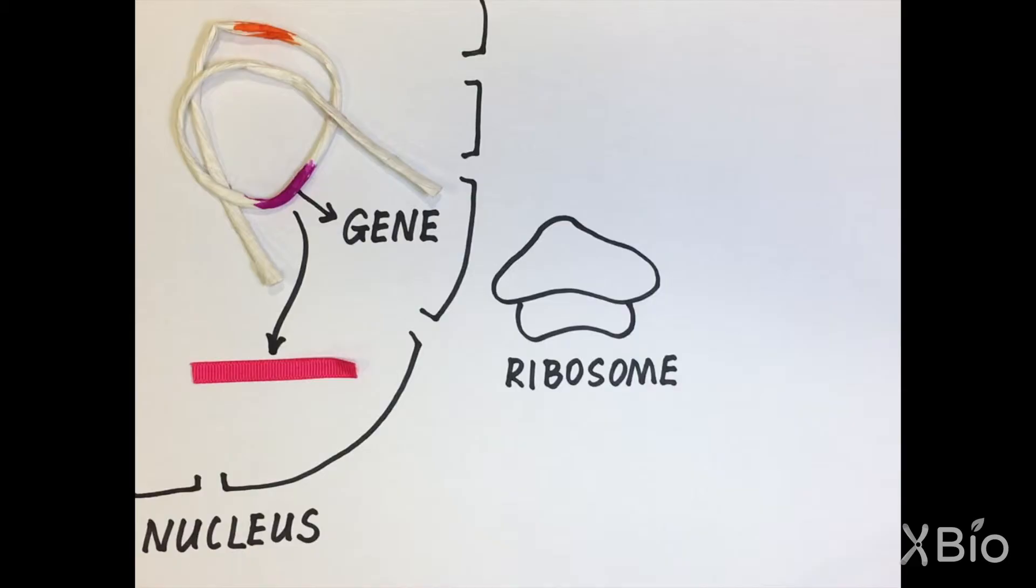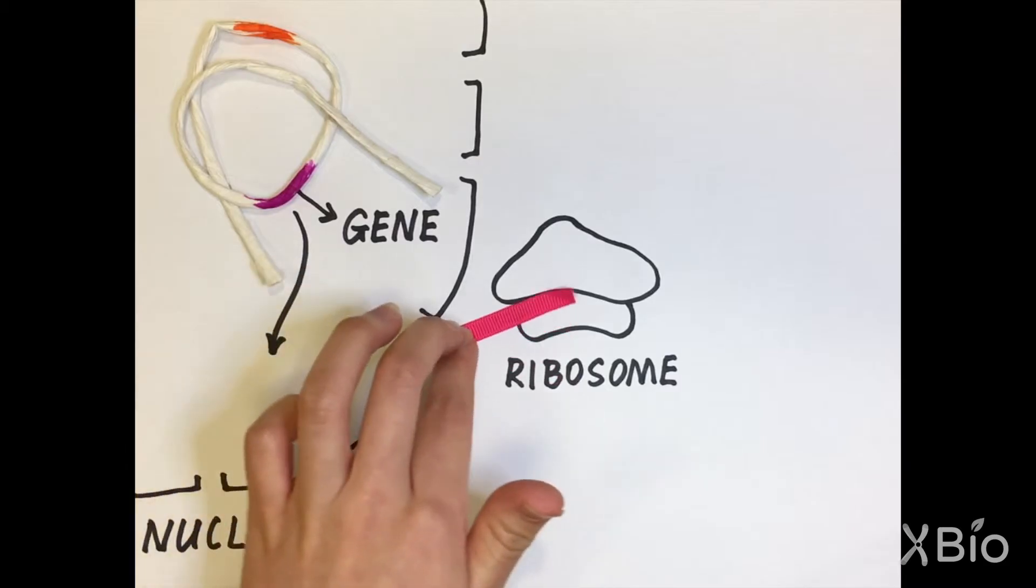This piece of RNA is small enough to leave the nucleus and bring the instructions to the ribosome.